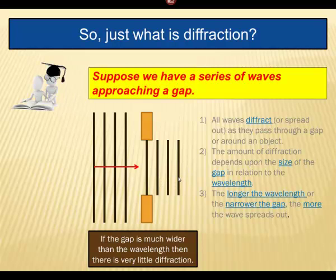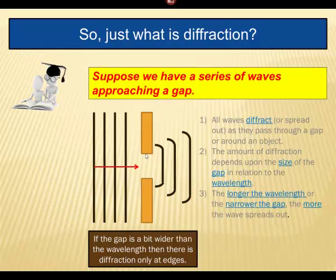This is what happens if we narrow the gap. Now, here we narrow the gap. This is much smaller. It's just a bit wider than the wavelength here. There is diffraction. You can see it here, but it's only occurring at the edges.